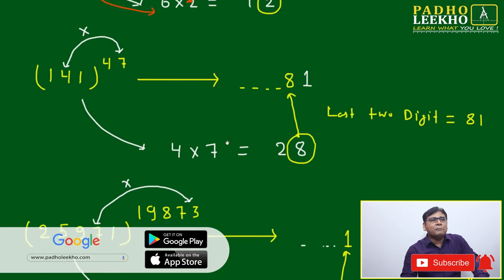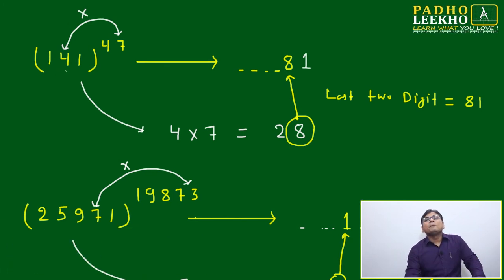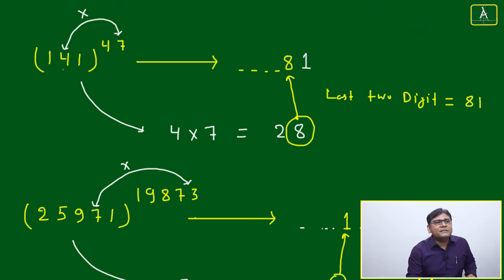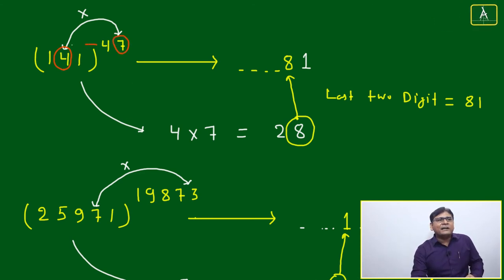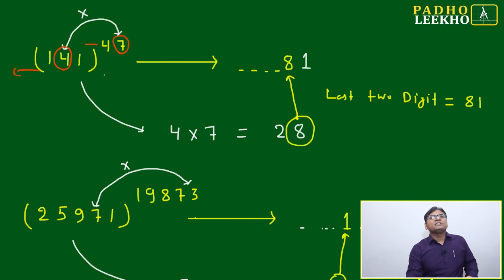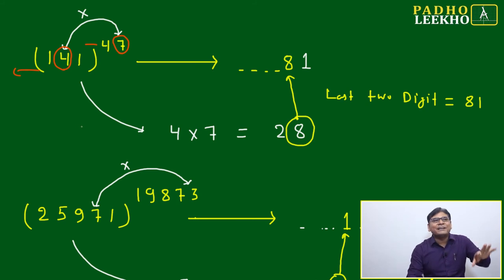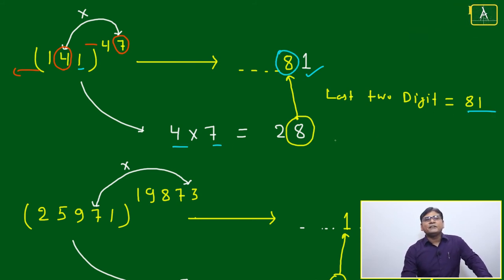Example with a three-digit base: 141 to the power 47. No need to be confused by the number of digits. Only the second last digit of the base matters. Here the second last digit of 141 is 4, and the unit digit of the power (47) is 7. Multiply: 4 × 7 = 28. Unit digit is 8. So the last two digits of 141^47 are 81.